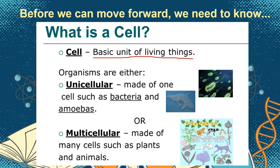Organisms can be classified as either unicellular or multicellular. Unicellular means they are made of one cell only, such as bacteria and protists like amoeba. Multicellular means they are made of many cells, such as plants and animals, including human beings.